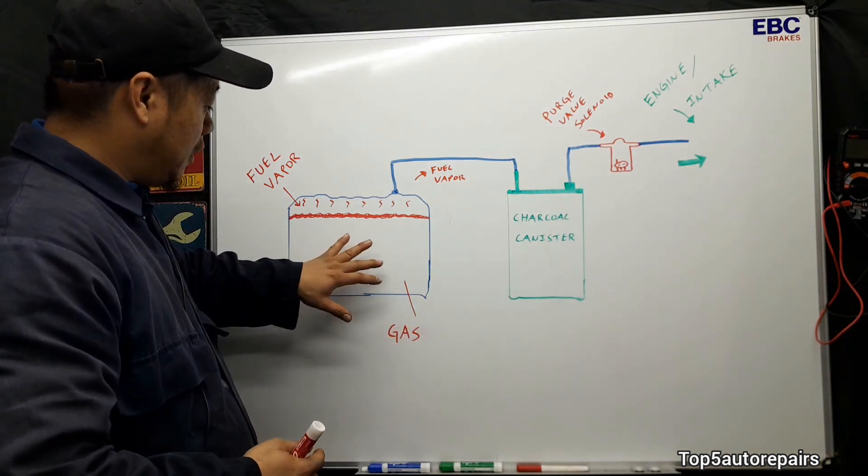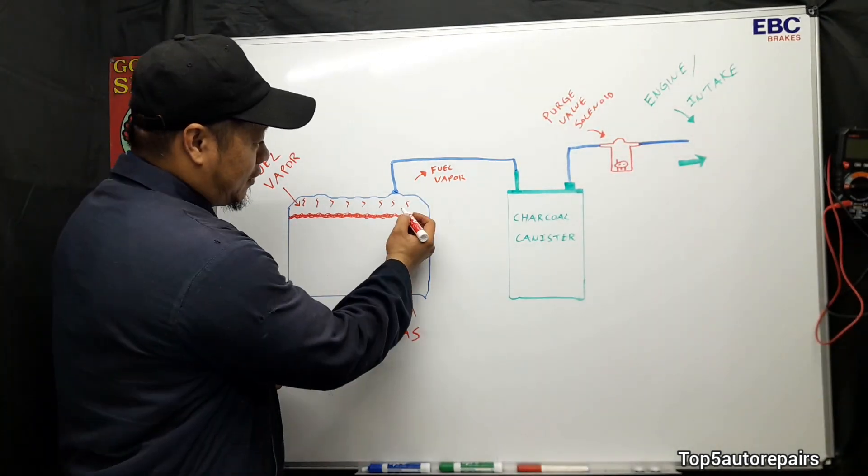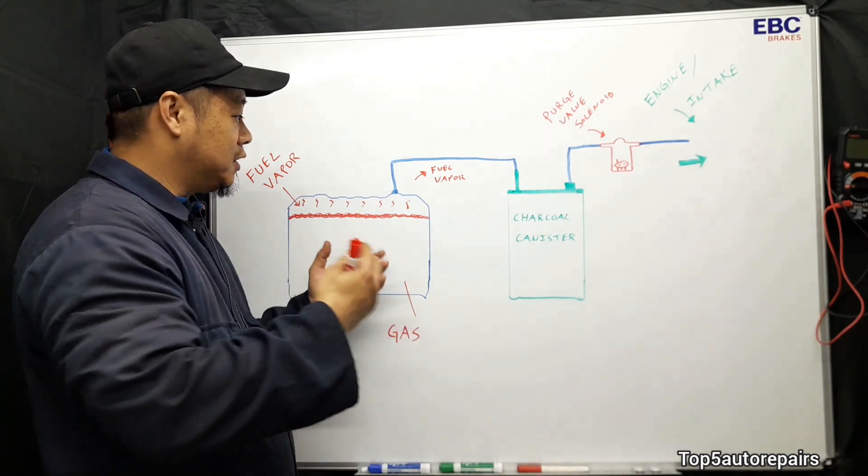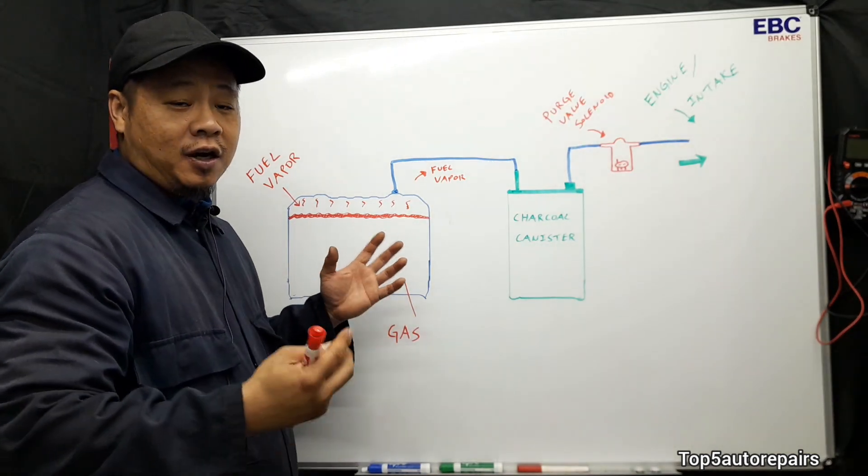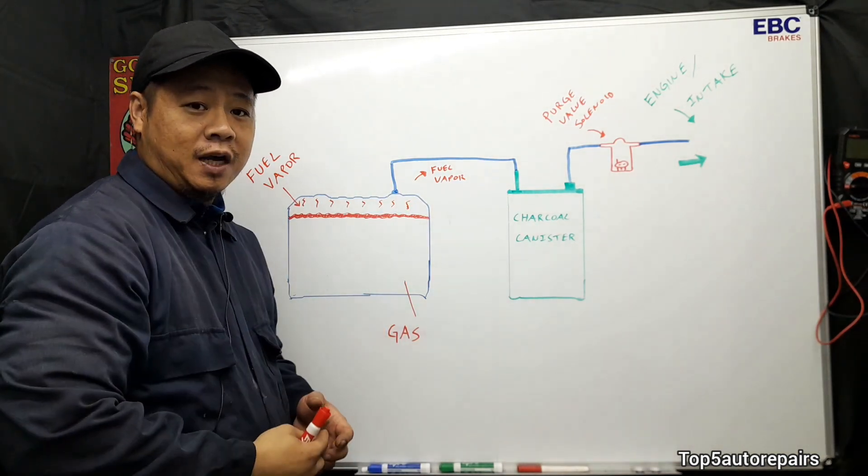So basically it all starts from the fuel tank. Gas expands and starts to vaporize and you have this fuel vapor right here and it needs to go somewhere. If it doesn't go somewhere it can cause increased pressure here, it can cause the fuel tank to crack and somehow it can cause the fuel vapor to escape into the atmosphere which isn't good for the environment.